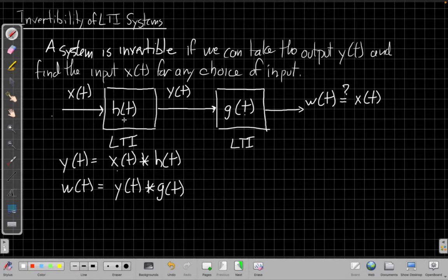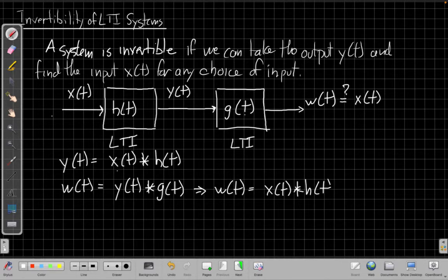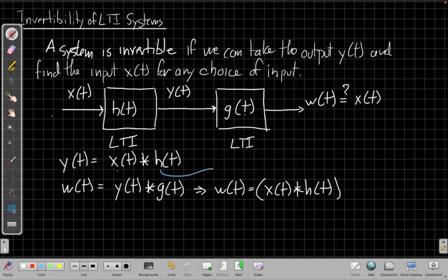It needs to be if g is the inverse of h, if this system is the inverse system of h. And so I can plug into this, I could say, well, this means that w(t) is equal to x(t) times h(t), right? Substituting that for my y. So I'm taking this equation here and plugging it in for y(t). I guess plug it in for y(t) here that gives me this. And then I'm convolving that with g(t).